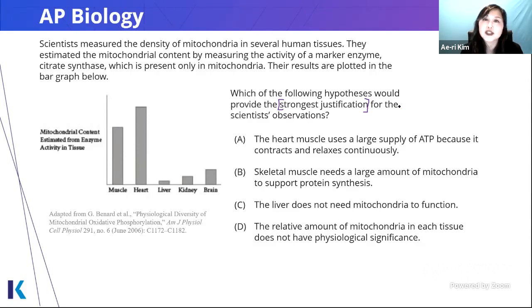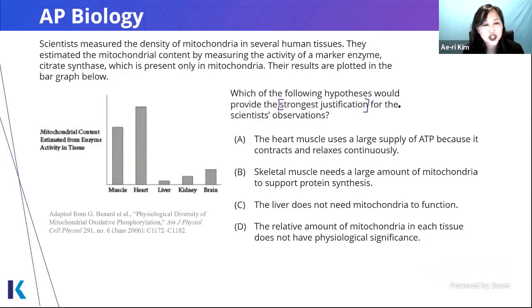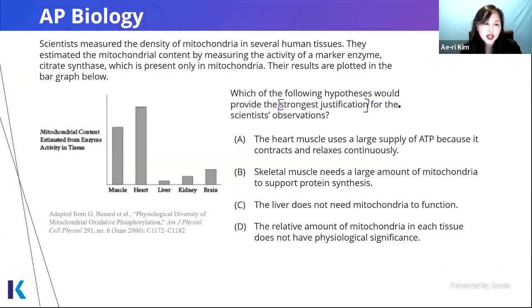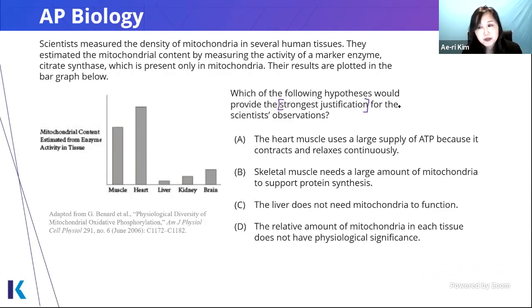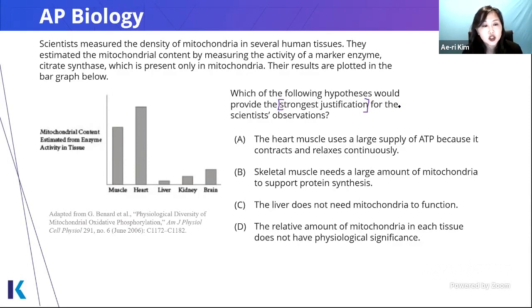Don't get trapped into trying to use an answer choice not supported by the data. Before you look at the answers, look at the graph and figure out your big takeaway. On the y-axis you have different kinds of tissue — muscle, heart, liver, kidney, brain — and the x-axis shows how much mitochondria exists. Tell me your big trend. If you're thinking liver, kidney, brain don't seem to have a lot of mitochondria because those values are low, while muscle and heart have a lot of mitochondria — that's exactly right. So we're looking for something that supports why muscle and heart would require more mitochondria.